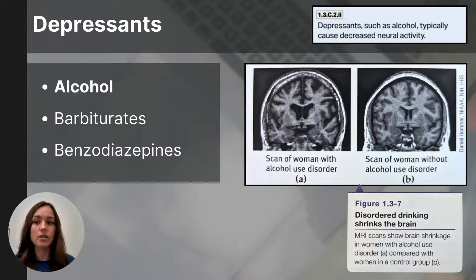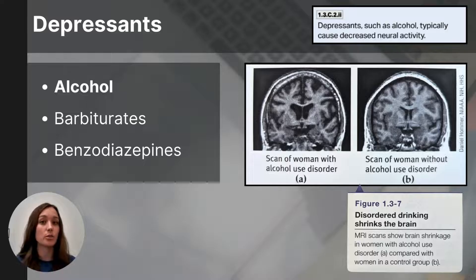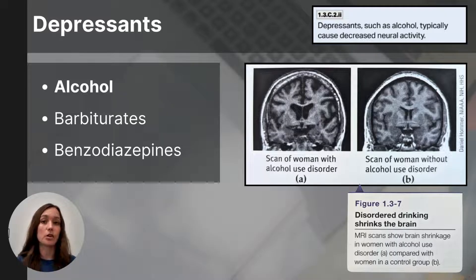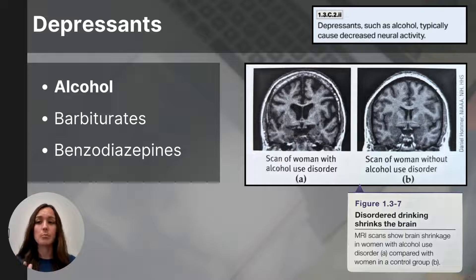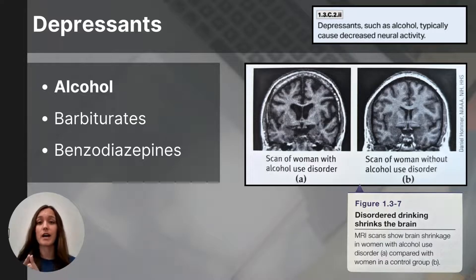Alcohol impairs the nervous system, with the body needing about one hour to break down one drink. Excessive consumption slows reaction time, impairs decision making, and slurs speech. High amounts can eventually depress vital functions like breathing and heartbeat. Alcohol initially increases dopamine and serotonin, blocks glutamate, and acts as a partial agonist for GABA, which slows neural activity. Despite being legal for adults over 21 in the United States, users should be aware of alcohol's effects and dosage to prevent overdose. Barbiturates are sedatives that slow neural activity and can be prescribed to reduce anxiety or aid sleep. Mixing depressants like alcohol and barbiturates can exponentially increase their sedative effects and pose serious risks, including use by people with harmful intent who spike drinks.